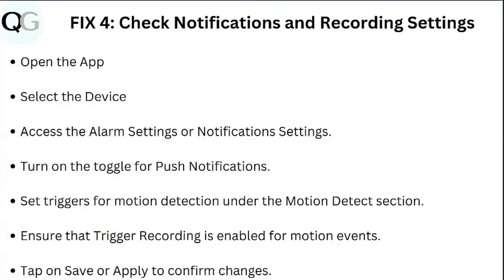Step four: notifications and record settings. Open the app, select the device, and access the alarm settings or notification settings. Turn on the toggle for push notifications. Set triggers for motion detection under the motion detect section. Ensure that trigger recording is enabled for motion events. Tap save or apply to confirm changes.